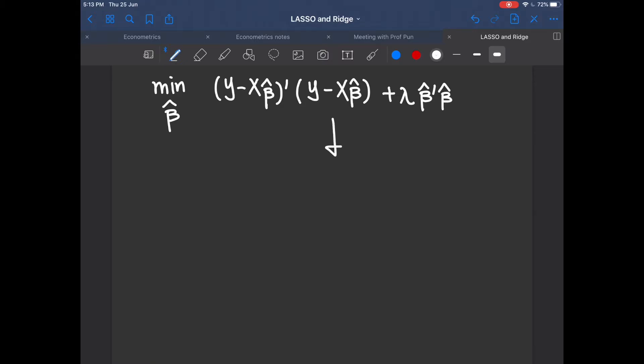And the first step is to expand this term. Expanding this whole expression, it will be y transpose y minus beta hat transpose x transpose y minus y transpose x beta hat plus beta hat transpose x transpose x beta hat plus lambda beta hat transpose beta hat. So let's name this whole expression L. And then we want to differentiate L with respect to beta hat.